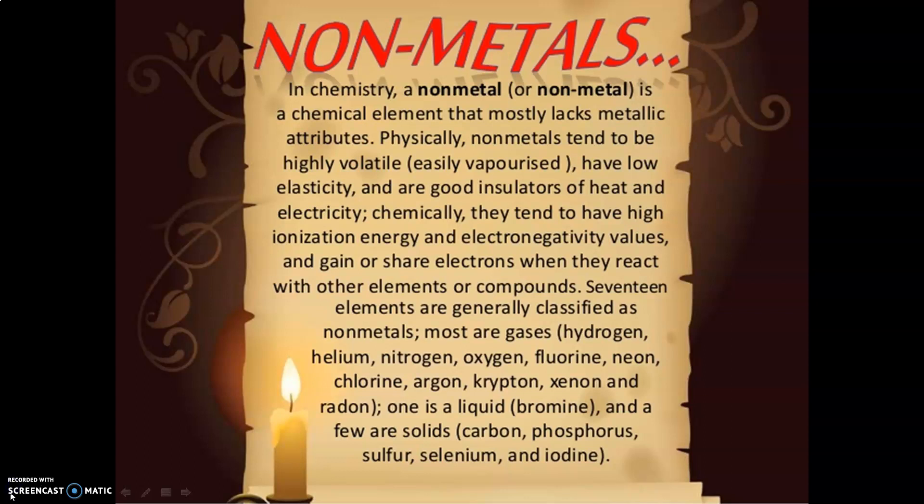Nonmetals are very few in number compared to metals, excluding inert gases. There are only 11 nonmetals known to us. Examples include hydrogen, oxygen, nitrogen, carbon, chlorine, sulfur, phosphorus, iodine, bromine and fluorine. Metals are good conductors of electricity, whereas nonmetals are bad conductors of electricity, though exceptions exist. Nonmetals do not have lustre, have low elasticity, and are not ductile.